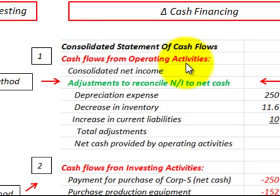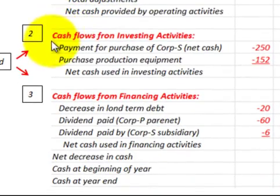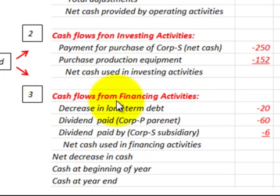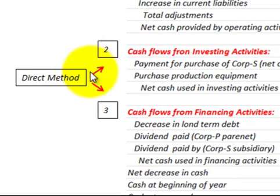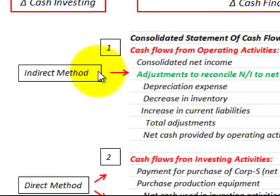The first section would be our cash flows from operating activities, with those activities listed. Secondly, we'd have our cash flows from investing activities, and then we have our cash flows from financing activities. Now, for investing and financing activities, whether you use the indirect method or the direct method, you're still using the direct method for those. But for cash flows from operating activities, we use the indirect method.